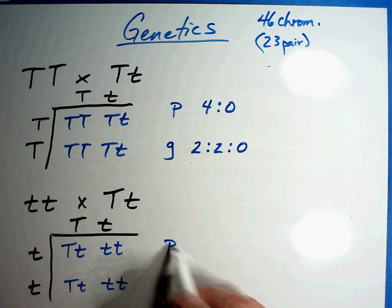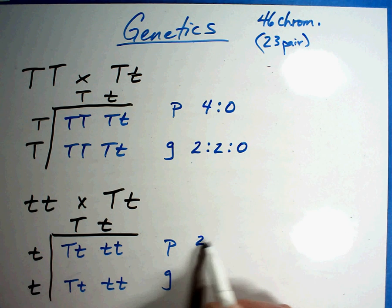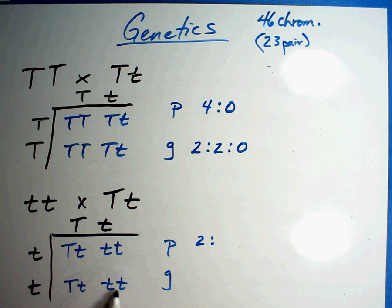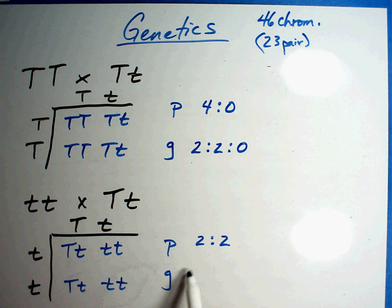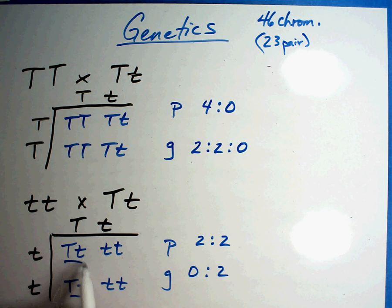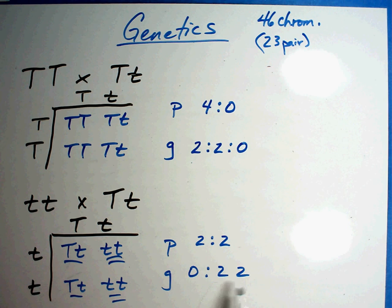Now let's check phenotype and genotype. Physically, what do I see? How many tall? I see 1, 2 tall and 1, 2 short. Genotype — what's actually in the genes? Pure tall, big T big T — I don't have any of those. Mixed tall — there's 2 of them. And then pure short — that would be that one and that one. So phenotype is 50% and 50%. Genotype would be 0%, 50%, and 50%.